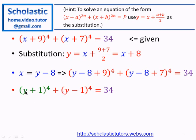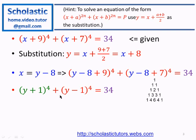Now our task is to expand this using binomial expansion. For a power of 4, the coefficients from Pascal's triangle are 1, 4, 6, 4, 1.